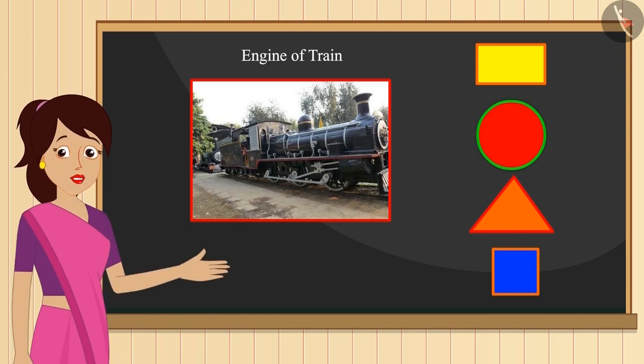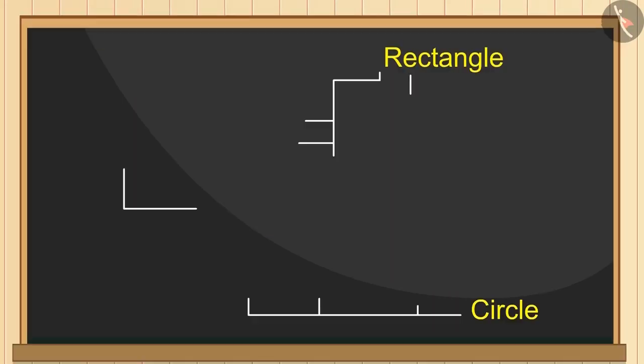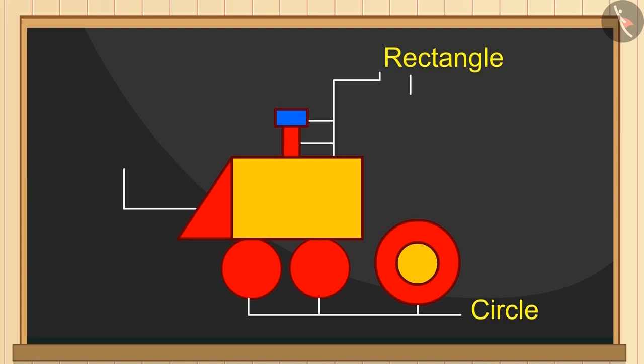If you want, then you can pause the video over here and think. See this, its wheels are like a circle and its chimney is made of two rectangles.